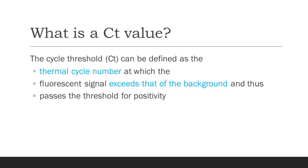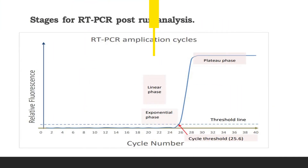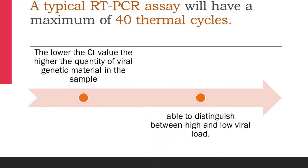The cycle threshold value can be defined as the thermal cycle number at which the fluorescent signal exceeds that of the background and thus passes the threshold of positivity. This graph shows the RT-PCR post-run analysis, with the x-axis being the cycle number and the y-axis being the relative fluorescence. You can see a dotted line which shows the threshold line. A typical RT-PCR will have a maximum of 40 thermal cycles. The lower the CT value, the higher the quantity of viral genetic material in the patient sample.